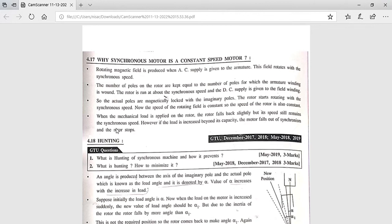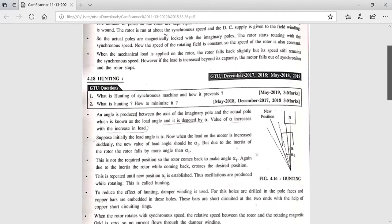The motor will fail and the rotor will stop when its capacity is exceeded. That's why it's called a constant speed motor, because the speed remains constant at synchronous speed. Now, hunting.